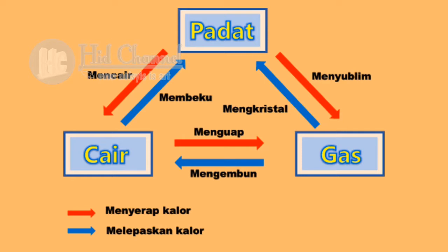Tanda anak panah berwarna merah itu menunjukkan bahwa dalam perubahannya benda menyerap panas. Sedangkan warna biru menunjukkan bahwa dalam perubahannya benda melepas panas. Contoh, benda padat untuk berubah menjadi benda cair itu menyerap panas. Sedangkan cair berubah menjadi padat atau membeku, itu berarti melepas panas. Dan seterusnya.